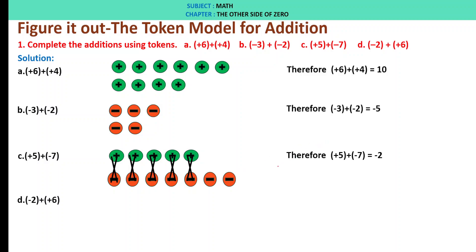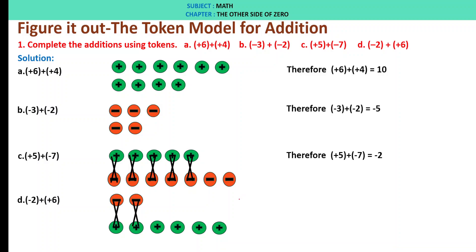D: minus 2 plus plus 6. We have minus 2 tokens and plus 6 tokens. The 2 minus tokens will cancel with 2 of the positive tokens as neutrals. Therefore, we are left with plus 4. Therefore, minus 2 plus plus 6 is plus 4.